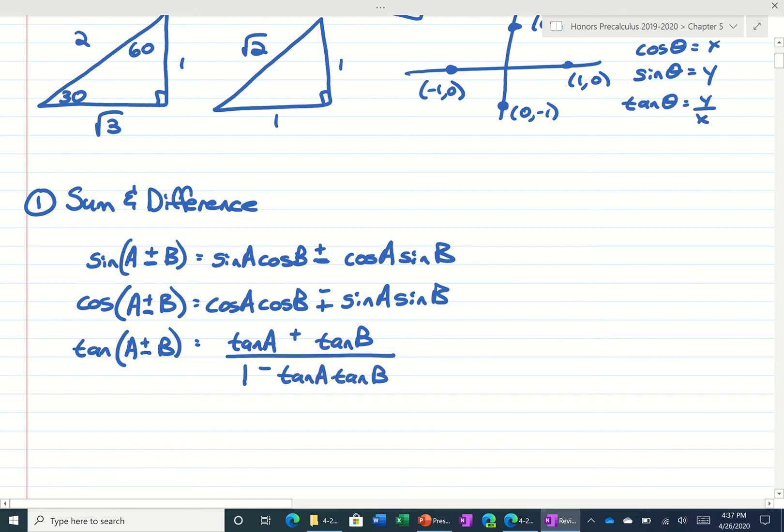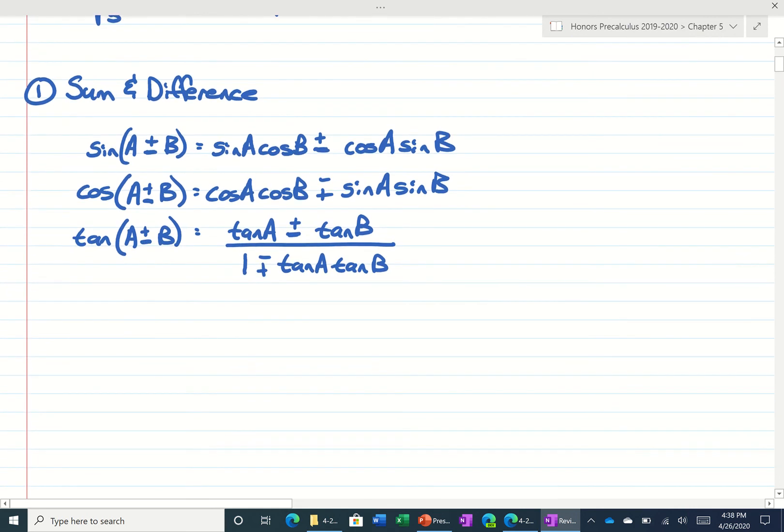And then if this was a difference, we would change this, and the top's always the same, the bottom's always the opposite. So sum and difference would happen, like say if you had 75 degrees. All right, 75 degrees, you could use first angles 30 and 45, and then you could use one of the formulas.